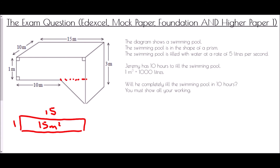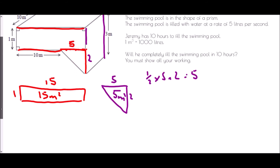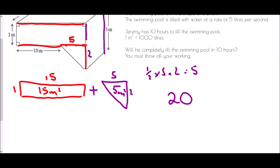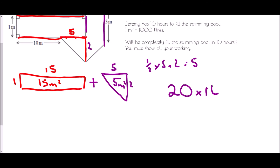So the first thing I'm going to do is find the area of the rectangular piece, which is 1 metre by 15 metres, and therefore this is 15 metres squared. The triangle needs a little more thinking. The entire length is 15, but we've used 10, so there are 5 metres left over. The entire height was 3, we've already used 1, so that gives me 2 as the height. The area of this triangle is a half times 5 times 2, which equals 5 metres squared. The volume of the shape is the area of the cross section — 15 plus 5 equals 20 metres squared — multiplied by the length, which is 10. So the volume is 200 metres cubed.